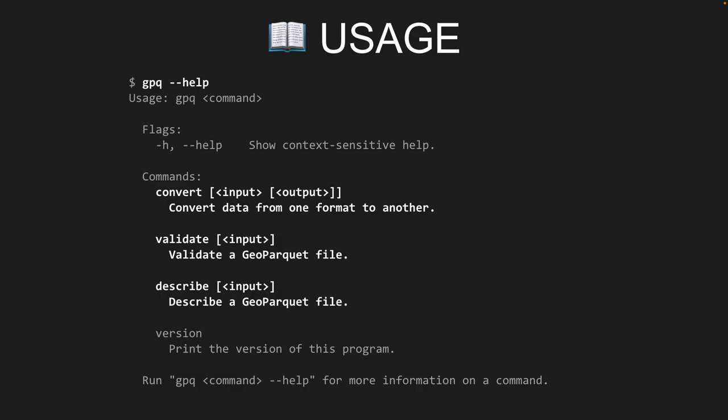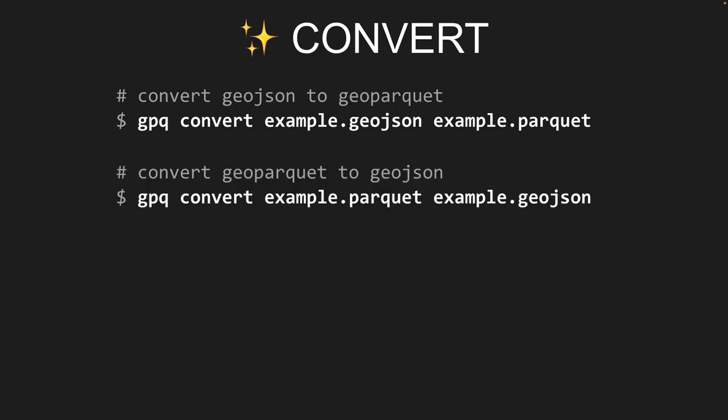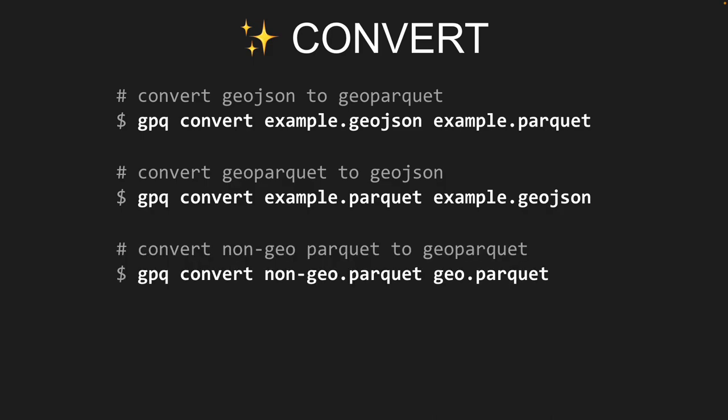Convert lets you transform data to and from GeoParquet — from GeoJSON or writing to GeoJSON. Validate runs a series of validation checks to ensure it conforms with the GeoParquet specification. Describe lets you inspect the structure and schema of the file. For example: gpq convert example.geojson example.parquet to transform GeoJSON to Parquet, or the same in the opposite direction.